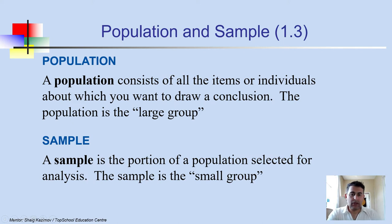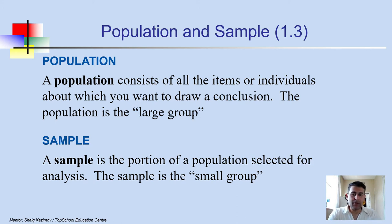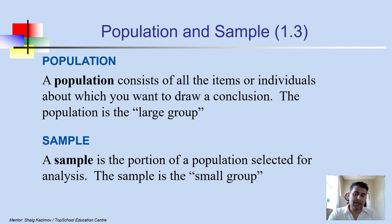Let's start with population. A population consists of all items and individuals about which you want to draw a conclusion. The population is a large group. For instance, the people who live in the United States or Canada — the inhabitants — form a large group. In the United States, about 300 million people live there; this is a population.